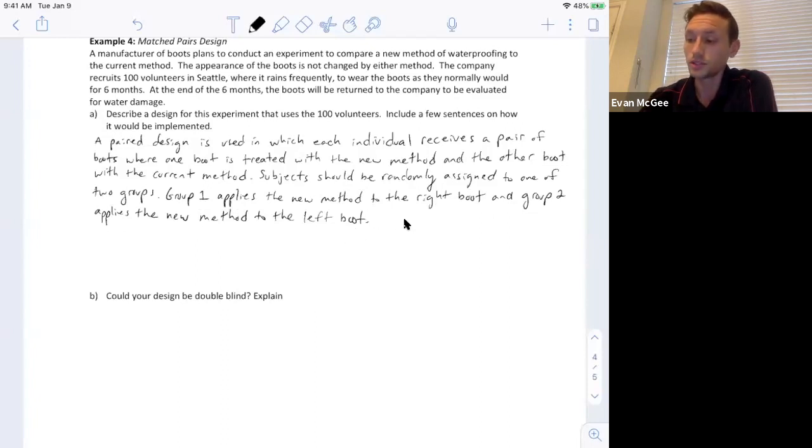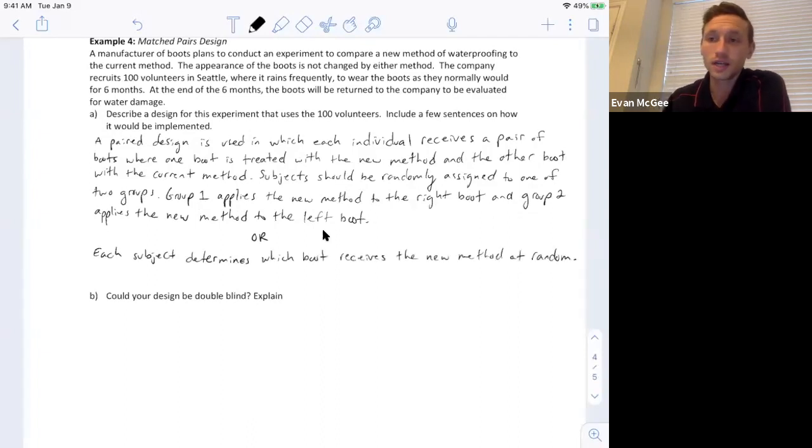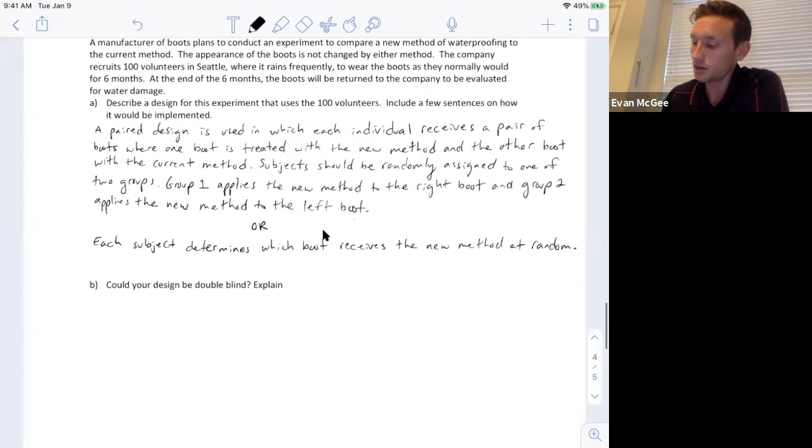Another option we could do is we could have each subject determine which boot is randomly or which boot receives the new treatment through some random process. So they could assign a random number to each boot and then randomly generate or look at table D.